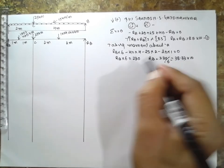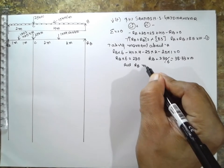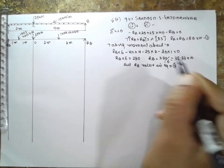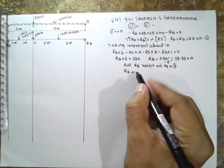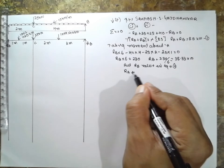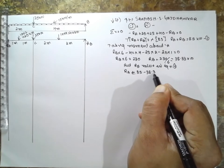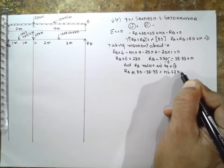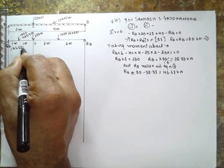Put RB value in equation 1. RA is equal to 85 minus 38.33, 46.67 kilonewton. RA is equal to 46.67 kilonewton.